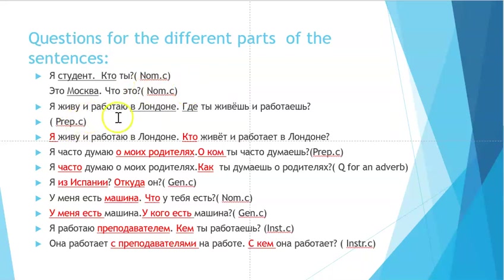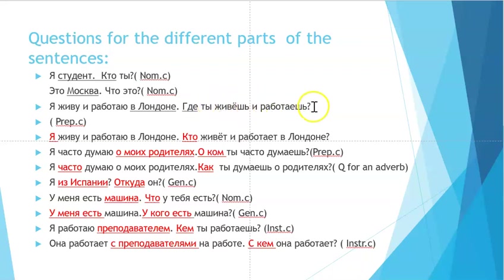For 'я живу и работаю в Лондоне' (I live and work in London), the question we put for 'в Лондоне' would be 'где' — where do you live and work? So: 'где ты живёшь и работаешь?' This is the prepositional case.